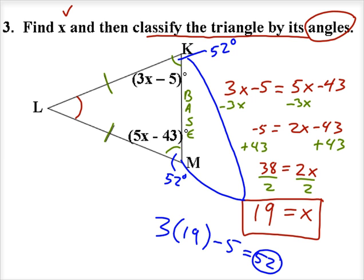And so this third angle, angle L, well, right now it's unknown. But because of the triangle sum theorem, I know that the measure of angle L plus two angles that are 52 degrees must add up to 180 degrees. And so we can solve for the measure of angle L.